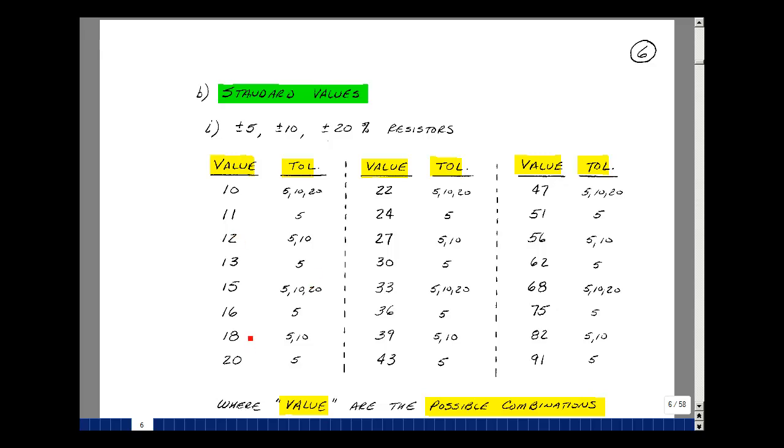Many of these numbers were picked so that the tolerances would overlap each other when you calculate the range of resistance values. So there's a way to possibly cover the value that you need.